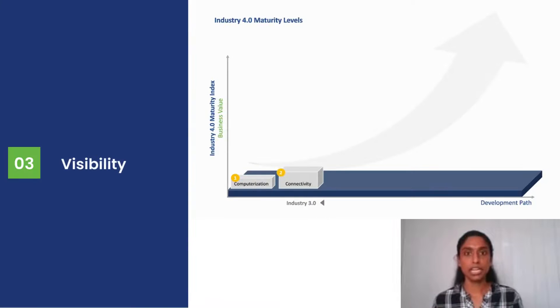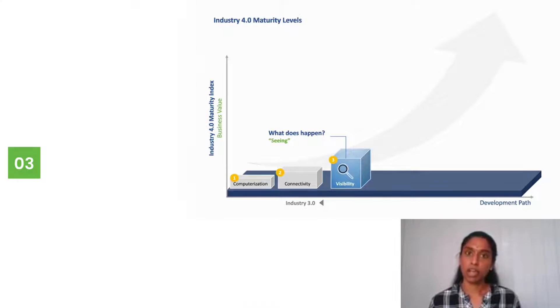They have to move to the third level, which is termed as Visibility. What does visibility say? What is actually happening in the system? Visibility is when different systems in the functions get connected together and the data is visible to the people in the organization.